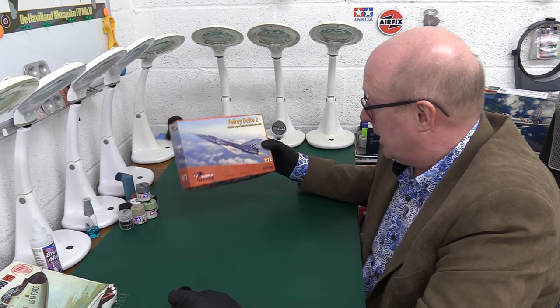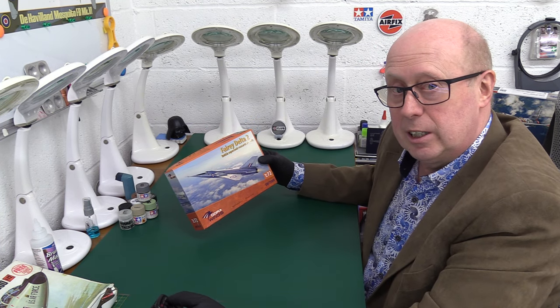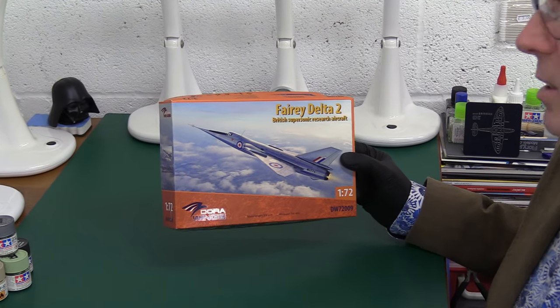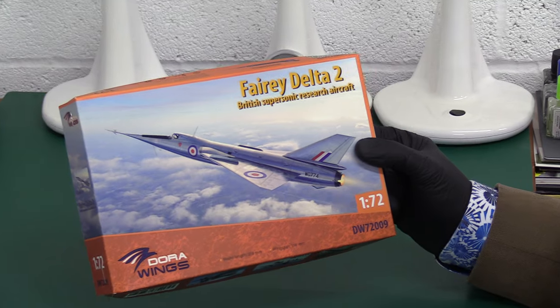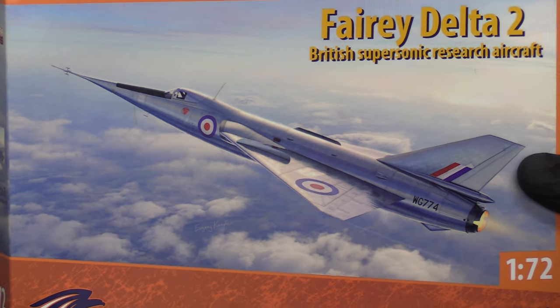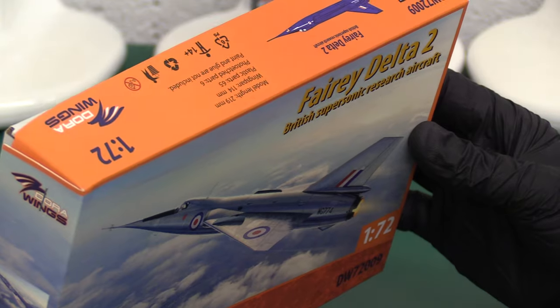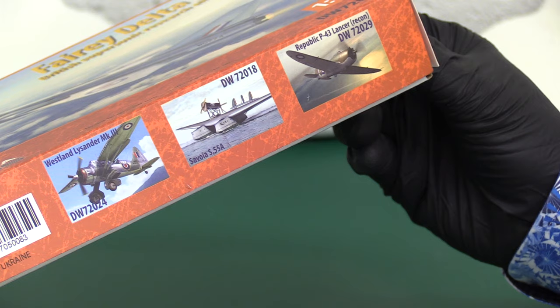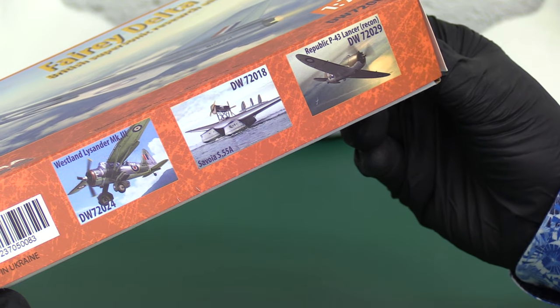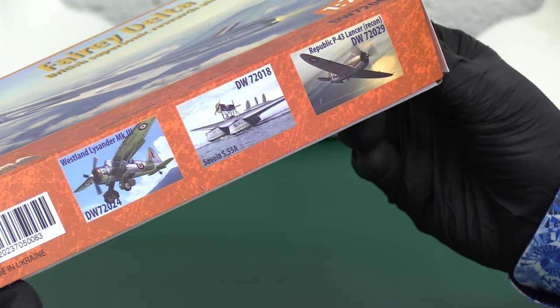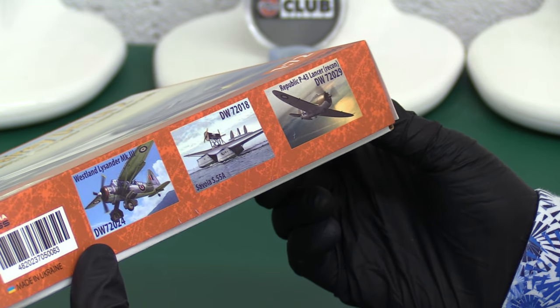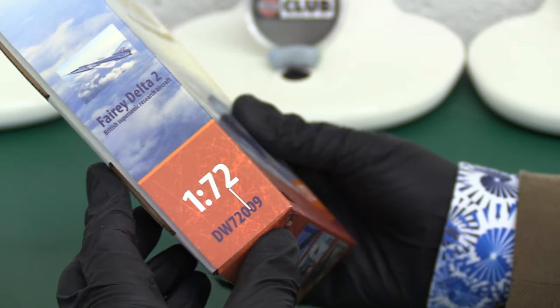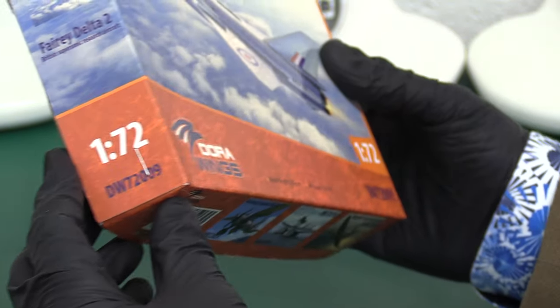So let's have a look at what we've got here. It's the rather interesting looking Dora Wings of the Ukraine. They have come up with this 1950s Fairy Delta 2, British supersonic research aircraft from the golden era of British jets. They also do a Westland Lysander, Republic P-47 Lancer, and a Savoia S.55. This is kit number DW72009.